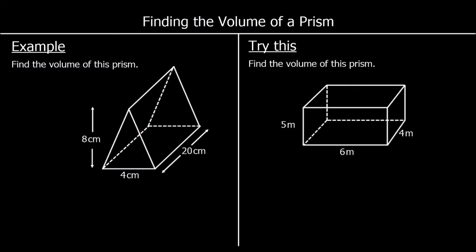To find the volume of a prism we find the area of the shape on the front and multiply it by how far back it goes. So in this case we're going to find the area of the triangle and then multiply it by 20.